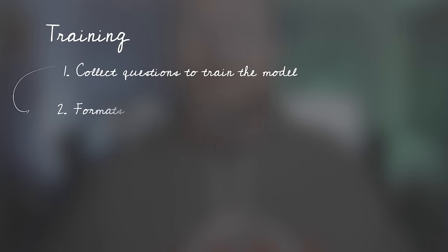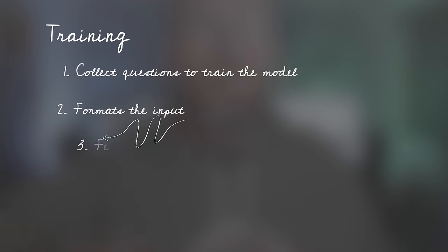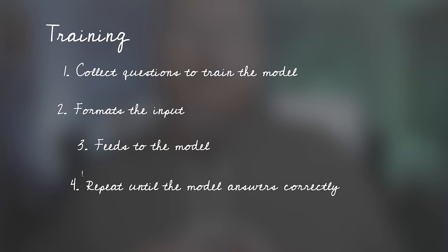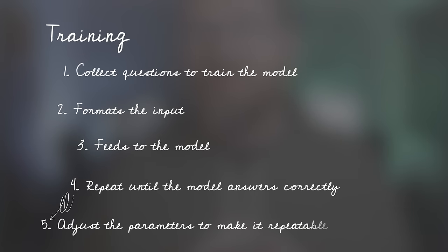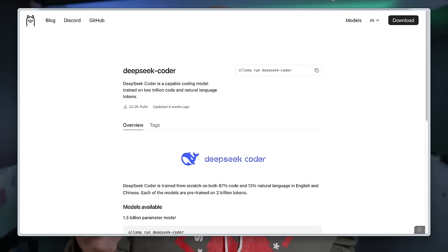So what defines the format? Well, the researchers go through a process called training that formats the inputs in a special way, feeds that to the model, and if the model answers the right way, adjusts the parameters of the model to try to ensure that it answers that way every time. Then it repeats that with a huge number of inputs and outputs, and hopefully at the end we have a smart model. The model expects all future input to look just like the training input, so we have to stick with that special format.